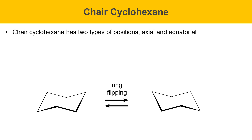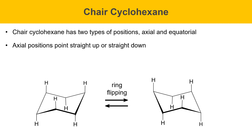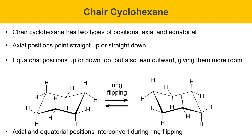Cyclohexane has two types of positions called axial and equatorial. The axial positions point straight up or straight down. Equatorial positions point up or down too, but they also lean outward, which gives them more room. Axial and equatorial positions interconvert in a process called ring flipping. When this molecule ring flips, axial groups end up in equatorial positions. This will be important when we look at substituted cyclohexanes, because the substituent's location — axial or equatorial — will change depending on which chair form it adopts.